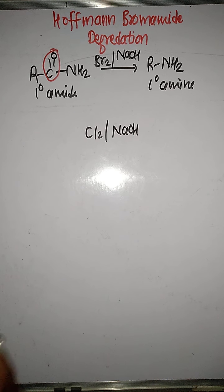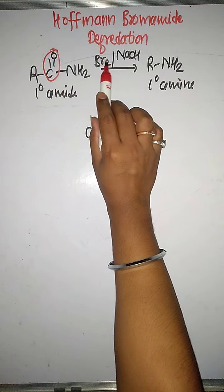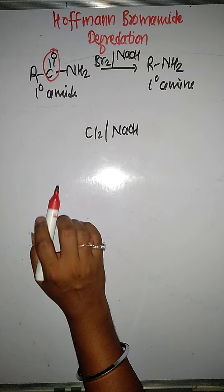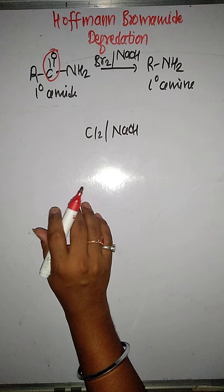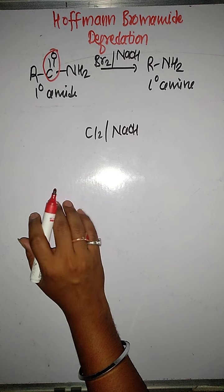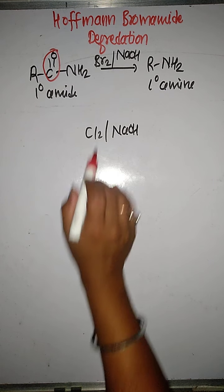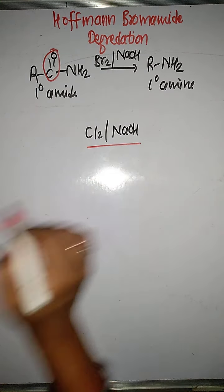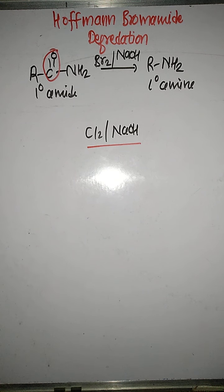To remember this reaction: basic bromine is the reagent, which means bromine in presence of a base like NaOH or KOH. Instead of bromine we can also use chlorine in basic medium.